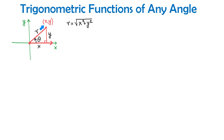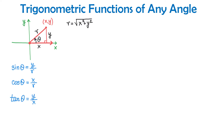With this point in quadrant 1 and the acute angle theta, we use this right triangle to define the 6 trigonometric functions. Sine of theta is the opposite side y divided by hypotenuse R. Cosine of theta is the adjacent side x divided by hypotenuse R. Tangent of theta is the opposite side y divided by the adjacent side x. Cosecant is the reciprocal of sine, and if sine is y over R, then cosecant is R over y.